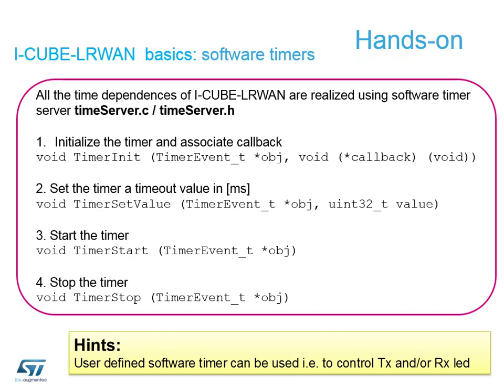Some of the utilities you could use are the time servers - in the afternoon hands-on sessions we will create a time server ourselves. The time servers follow similar steps to our state machine: an initialization part sets up various callbacks for each particular timer server you create, you can set the value (the delay) for which timer you want, and then you have two commands for start and stop. We'll be using this in our example to control an LED, so you can see how to use any of the timer servers available inside the system.